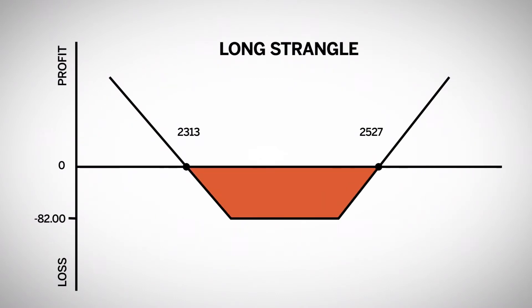Loss is limited to the cost of spread. Maximum loss occurs if the market is anywhere between the two strikes at expiration.